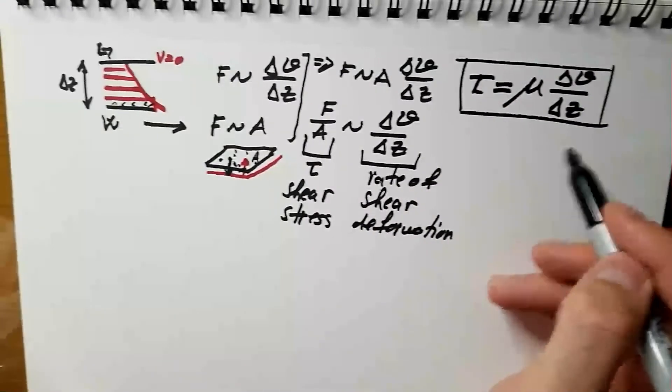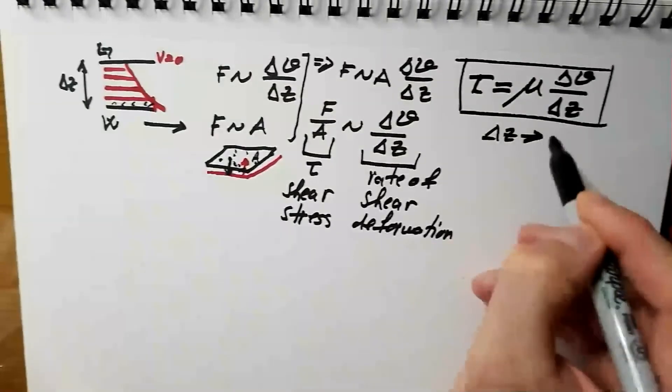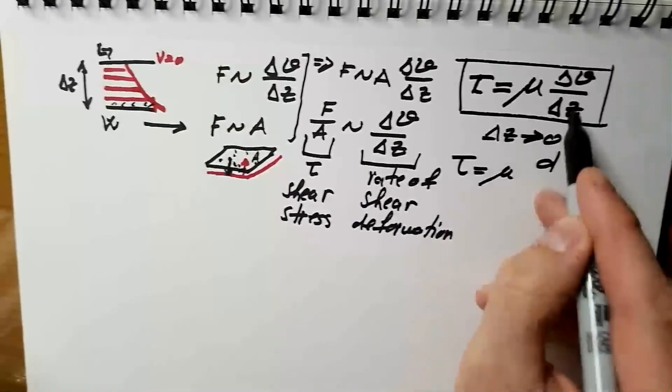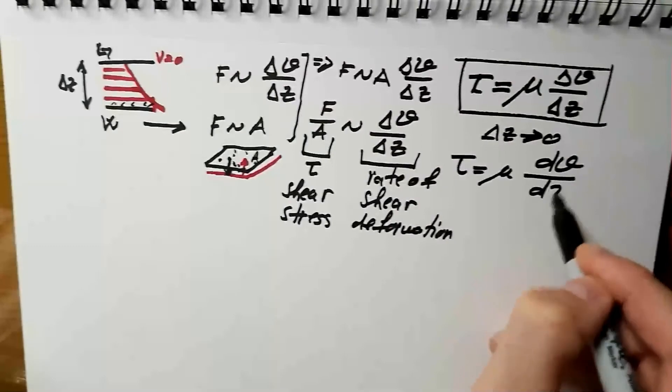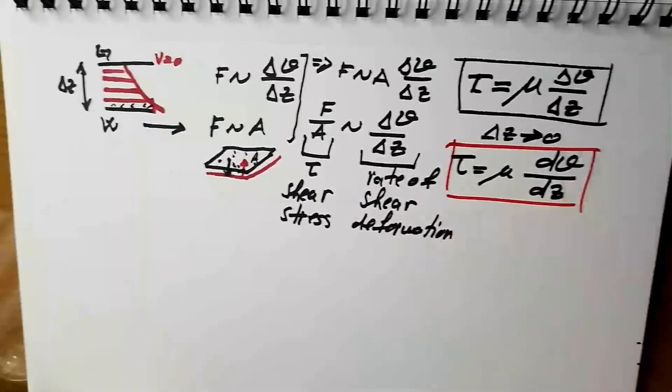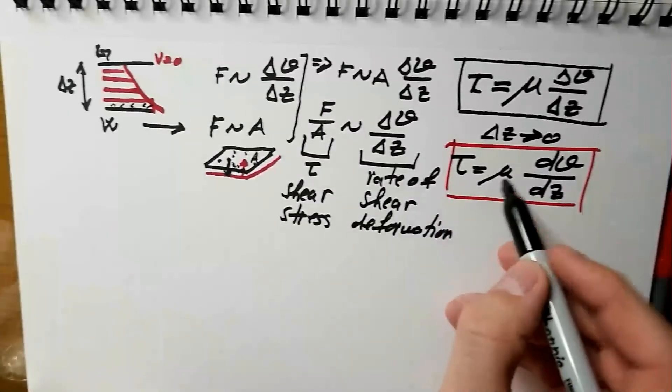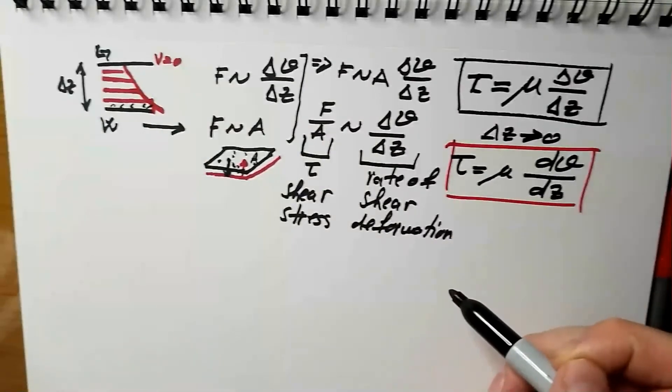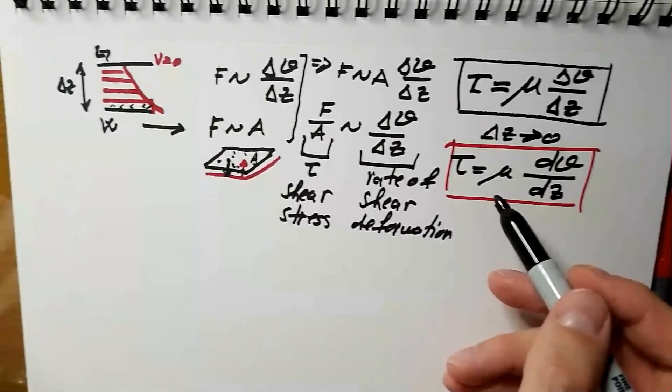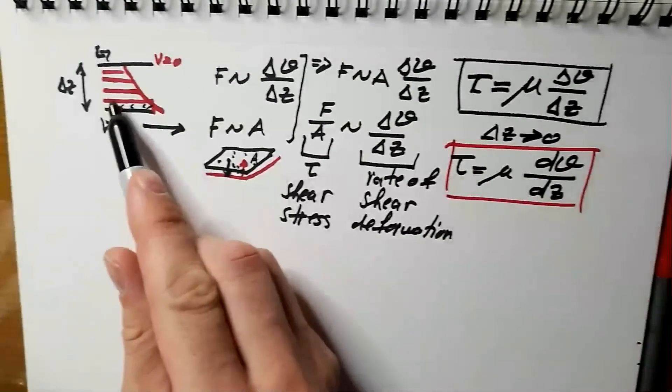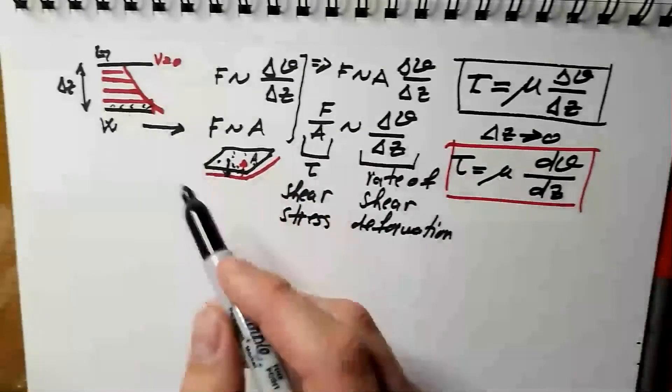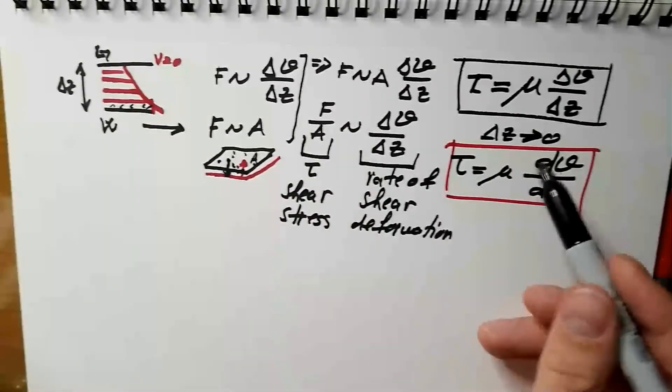If we, again, thanks to Isaac Newton, put delta Z in the limit case to go to zero, then Tau can be written as mu times derivative dV dz. And both of these are Newton's laws, Newton's law of viscosity. Mu, this coefficient is called dynamic coefficient of viscosity. And we can see the dynamic coefficient of viscosity is actually telling us what is the strength of these attractive forces between adjacent layers in the fluid, and how strong they are to resist relative motion of layers.